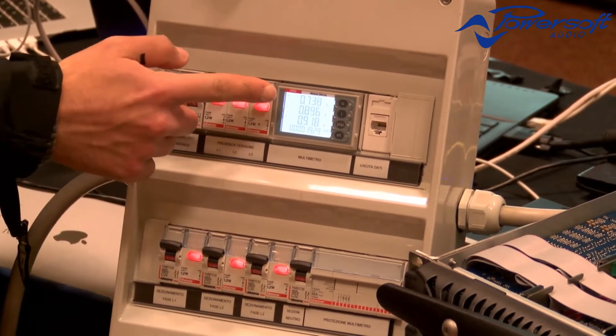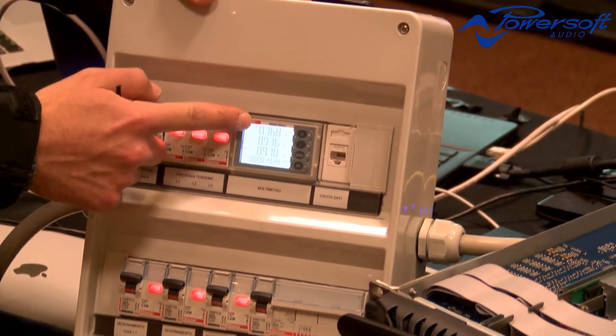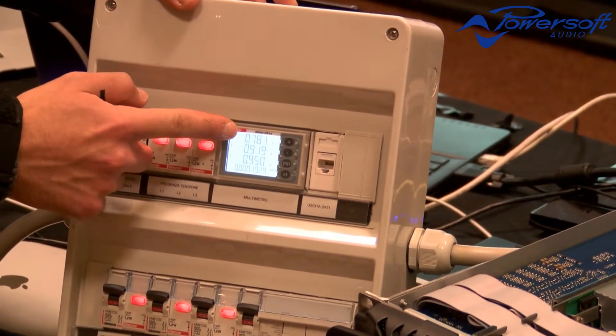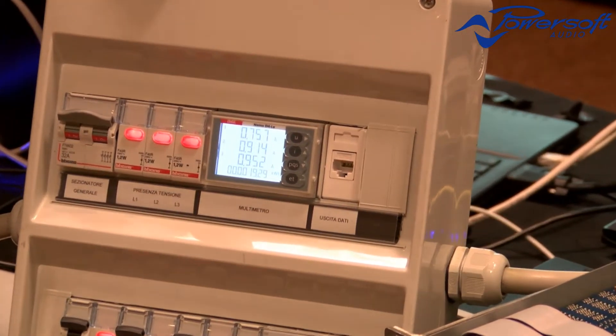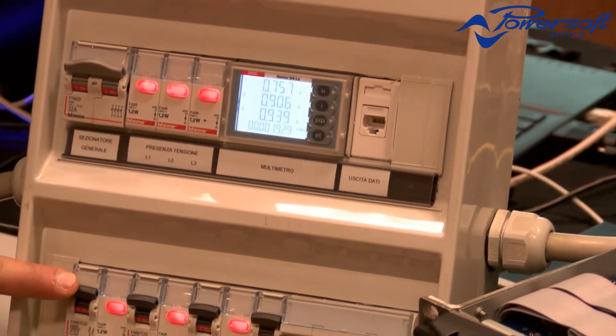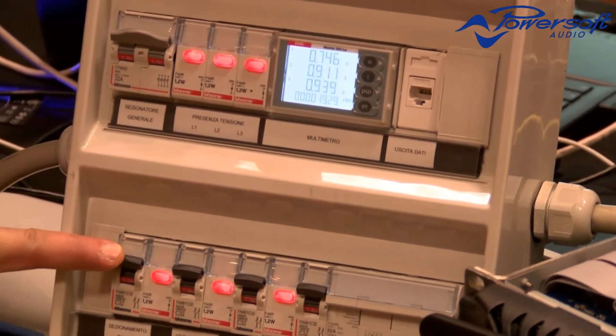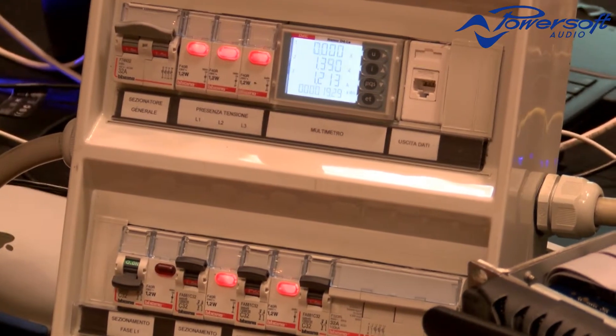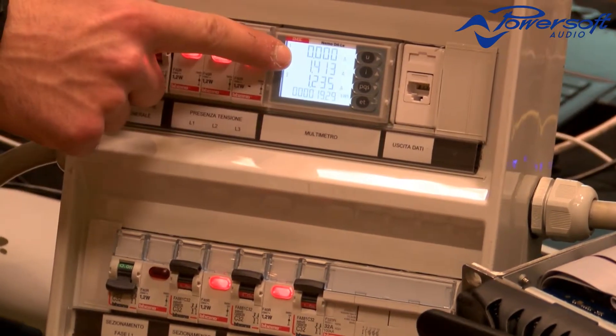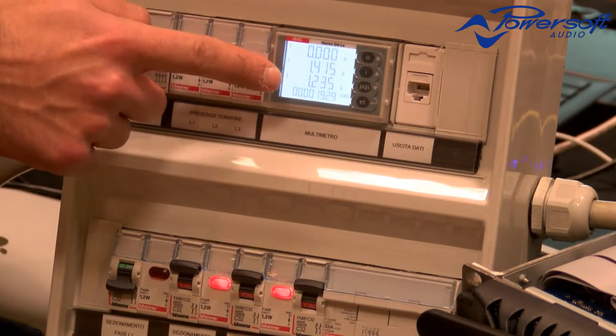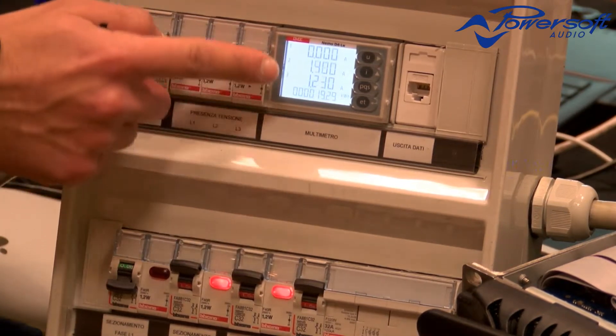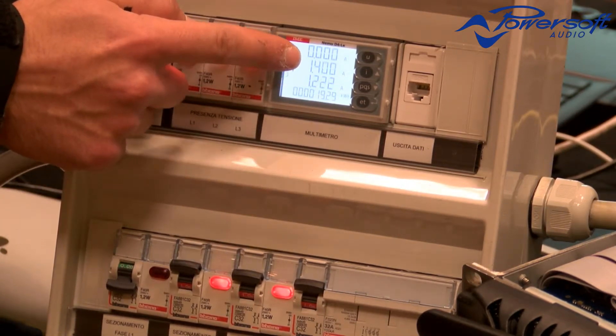If I cut one phase - phase one for example - the amplifier now spreads the load across the two remaining phases. We are reading 1.3 amps more or less on phase two and phase three.